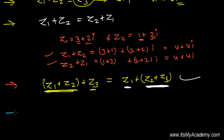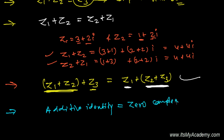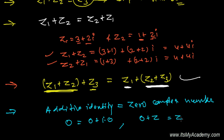One more thing — the additive identity, also called the zero complex number. We denote the zero complex number by 0, which equals 0 plus i times 0. Zero added to any complex number gives back the same complex number — that is why it is called the additive identity.